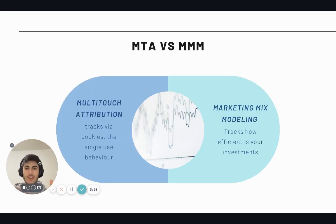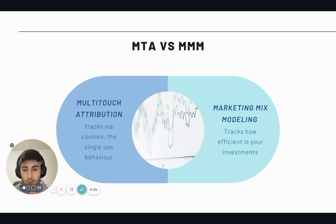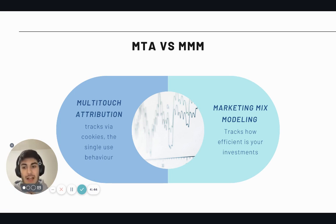Now let's see the difference between MTA — multi-touch attribution — and marketing mix models. MTA is what Google Analytics, Facebook Ads dashboard, or Google Ads does: it uses cookie technology to track every single user's behavior on our site, aggregates everything into a dashboard, and the idea is to track any single user to see where they came from.